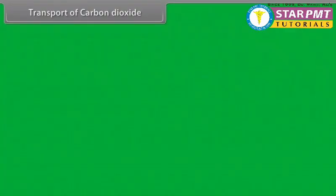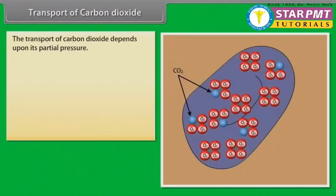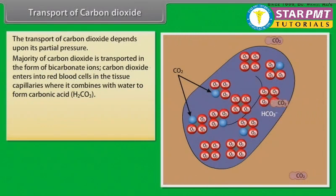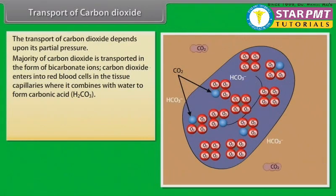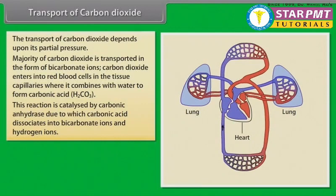Transport of carbon dioxide. Carbon dioxide is carried in the form of carbonic acid, bicarbonates of sodium and potassium, and as carbaminohemoglobin. The transport of carbon dioxide depends upon its partial pressure. The majority of carbon dioxide is transported in the form of bicarbonate ions. Carbon dioxide enters into red blood cells in the tissue capillaries, where it combines with water to form carbonic acid. This reaction is catalyzed by carbonic anhydrase, due to which carbonic acid dissociates into bicarbonate ions and hydrogen ions.